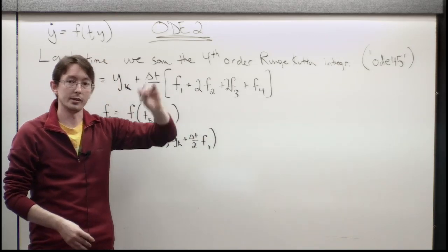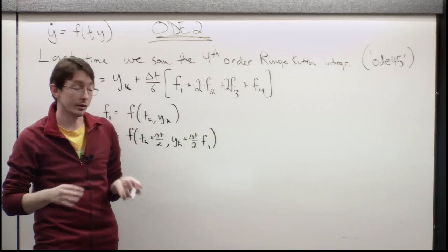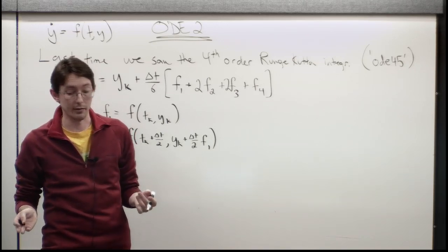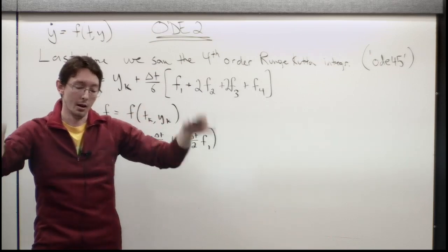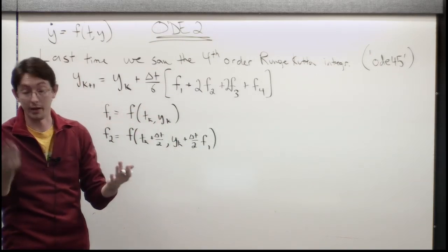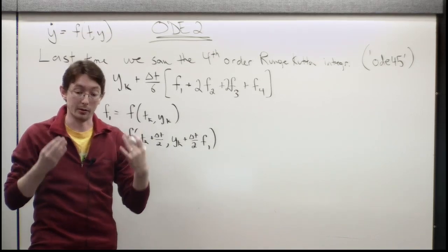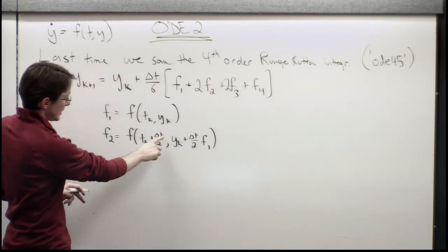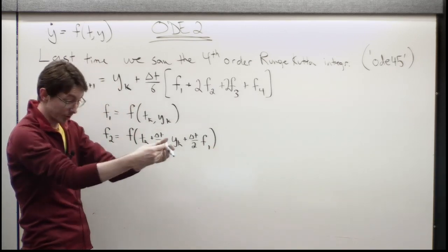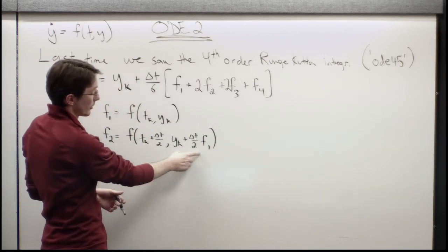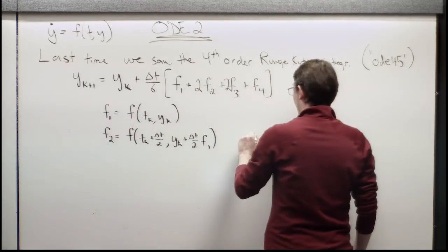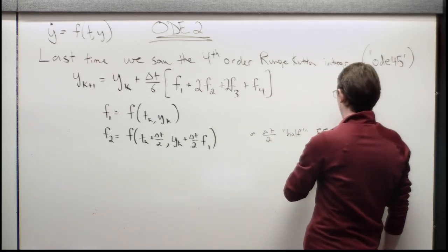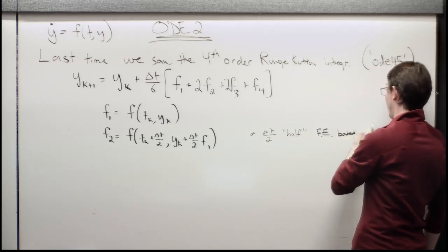I'll tell you what F1, F2, F3, and F4 are. F1 is equal to my F evaluated at TK, YK. F2 is F evaluated at TK plus delta T over 2 and YK plus delta T over 2, F1. Delta T is the time step. I'm simulating some trajectory forward in time. Maybe this is an asteroid moving through the solar system, maybe this is an oil plume spreading throughout the Gulf of Mexico, maybe this is the flow of a little particle past a Boeing 747 wing or a piece of dust that's being entrained into the downwash of a rotor blade on a helicopter. These are all systems that people are actively working on today, and they probably are using this integrator. So this is interesting: delta T over 2, that's a half step in the future, we're taking a half forward Euler step. This is a delta T over 2 half forward Euler based on F1.